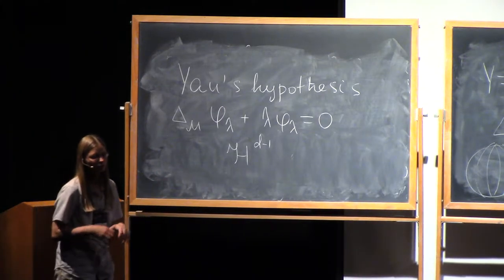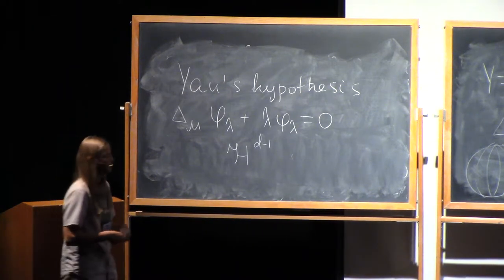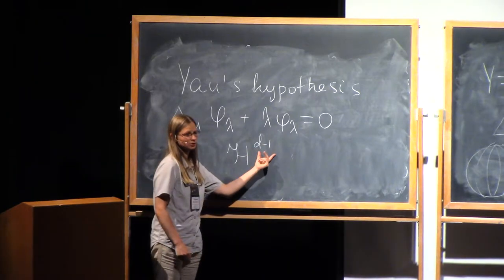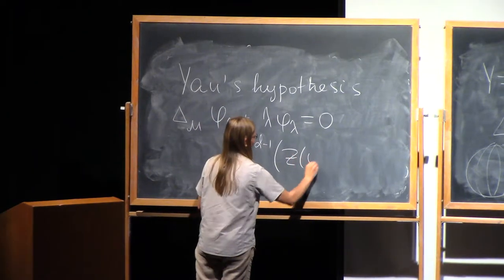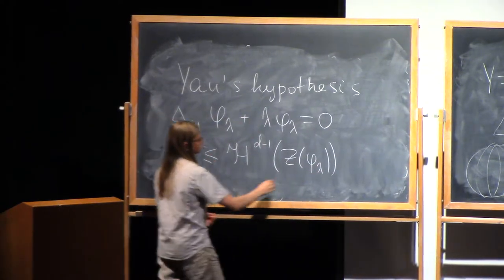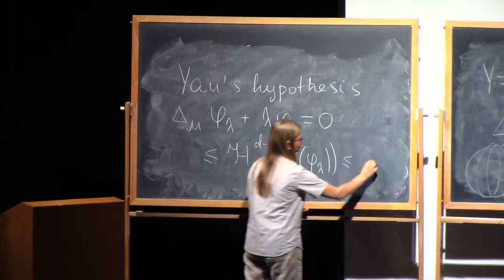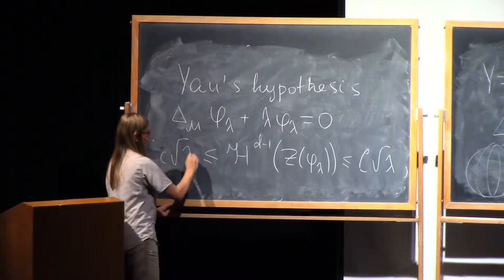In two-dimensional sphere, it's union of curves. In higher dimension, the dimension of the zero set is D-1. So it tells you that this is bounded by square root of lambda with two constants that depend on the manifold.